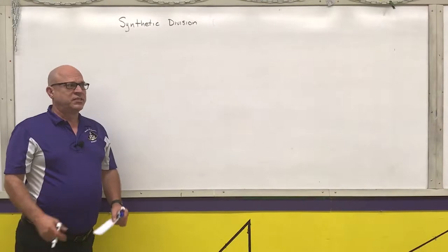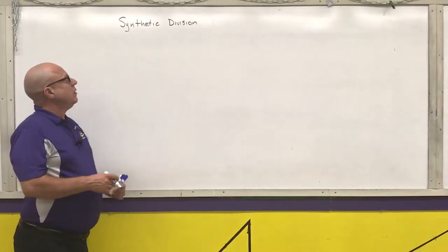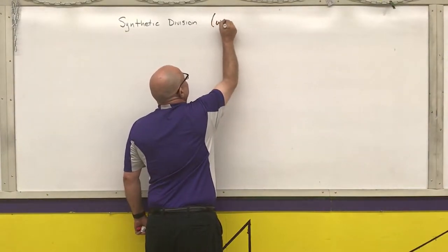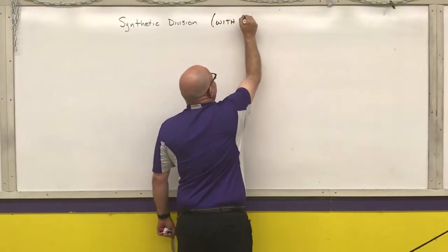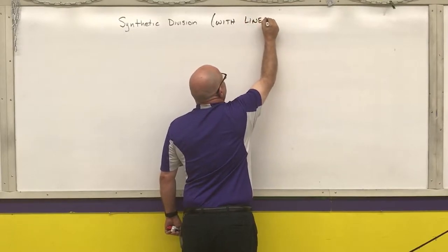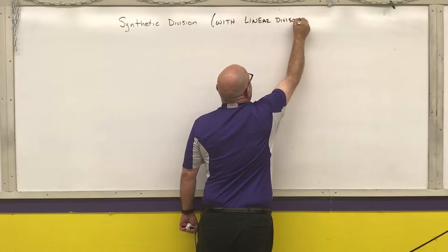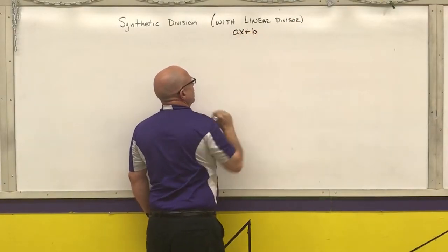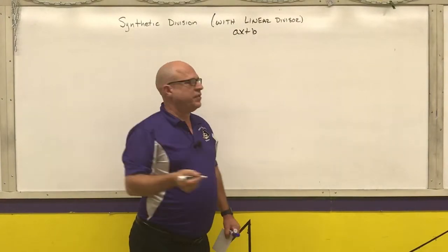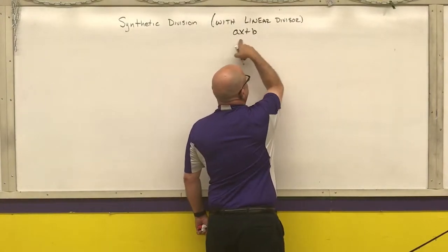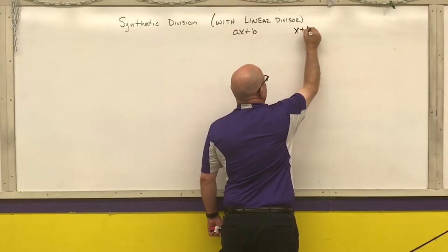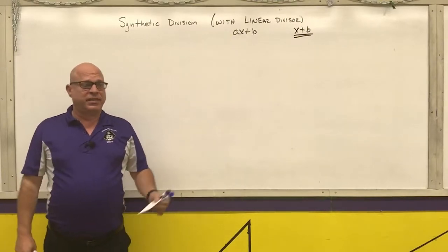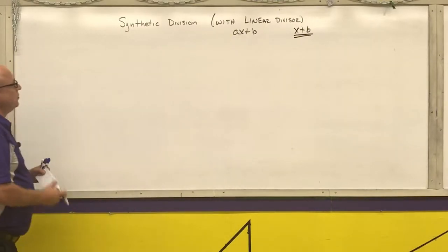Next I'm going to show you how to perform what is called synthetic division. We can do synthetic division with polynomials if the divisor is linear, which means it's in the form of AX plus B. The preferred method is if the coefficient in front of the X is just a 1, so I just have an X plus B. If I have a coefficient in front of that, it makes it a little messy, and I'm going to show you why.